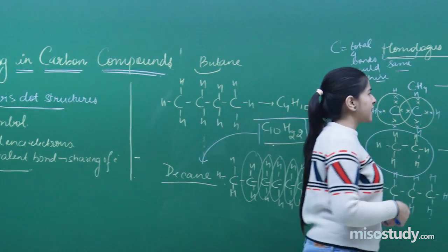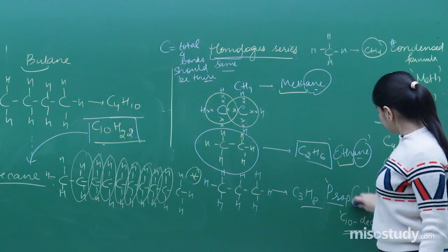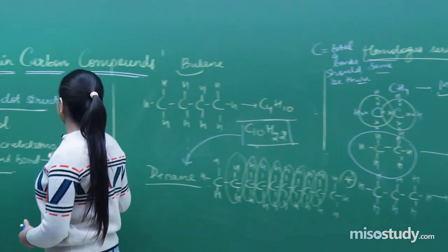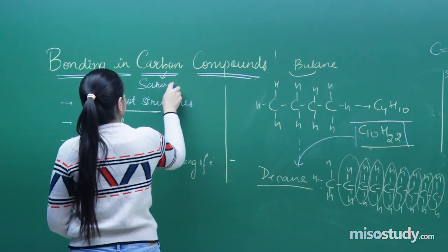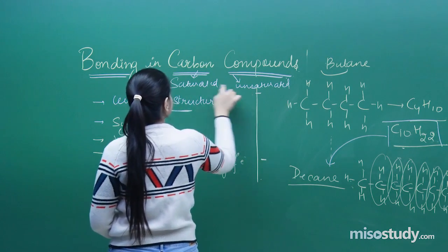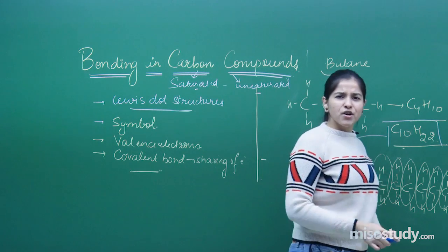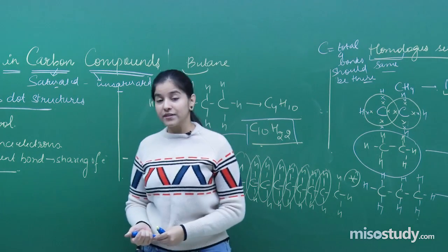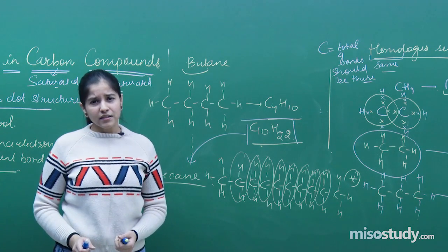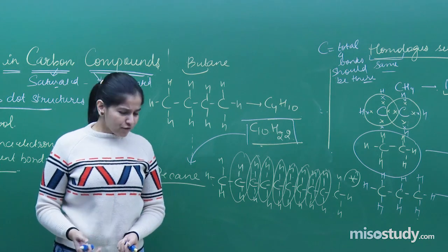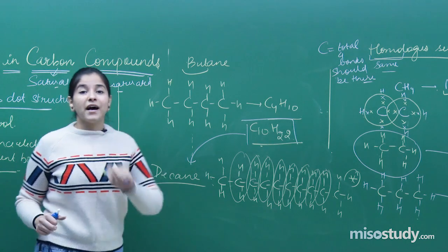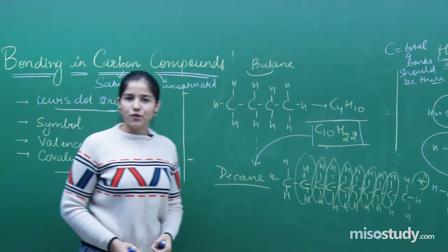Now you must be wondering why I keep writing 'ane' at the end. These compounds fall under the classification of saturated carbon compounds. Carbon compounds can be classified as saturated and unsaturated. You must have heard about saturated fat and unsaturated fat, or saturated ghee versus unsaturated oil — I will correlate that with this classification. This is the basic classification of carbon compounds. Have a nice day.